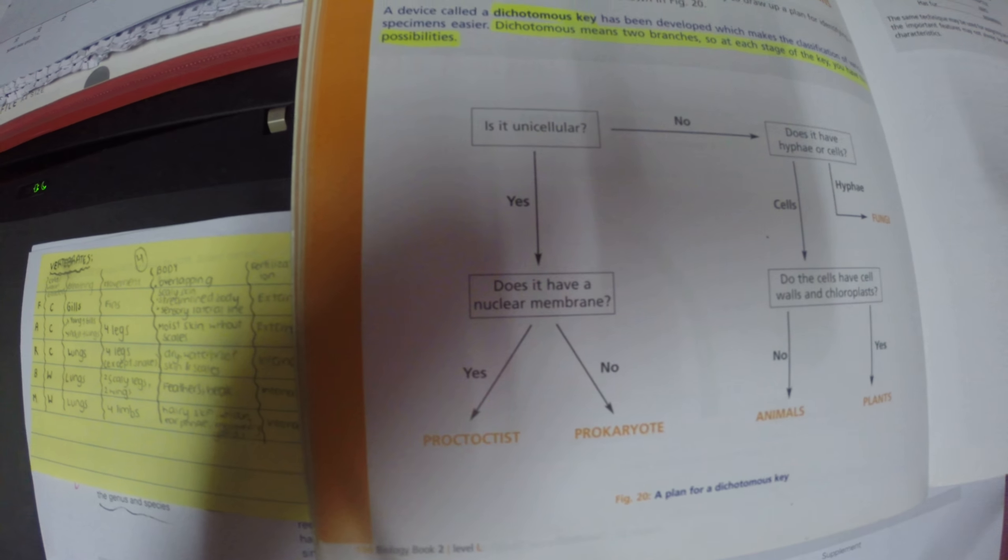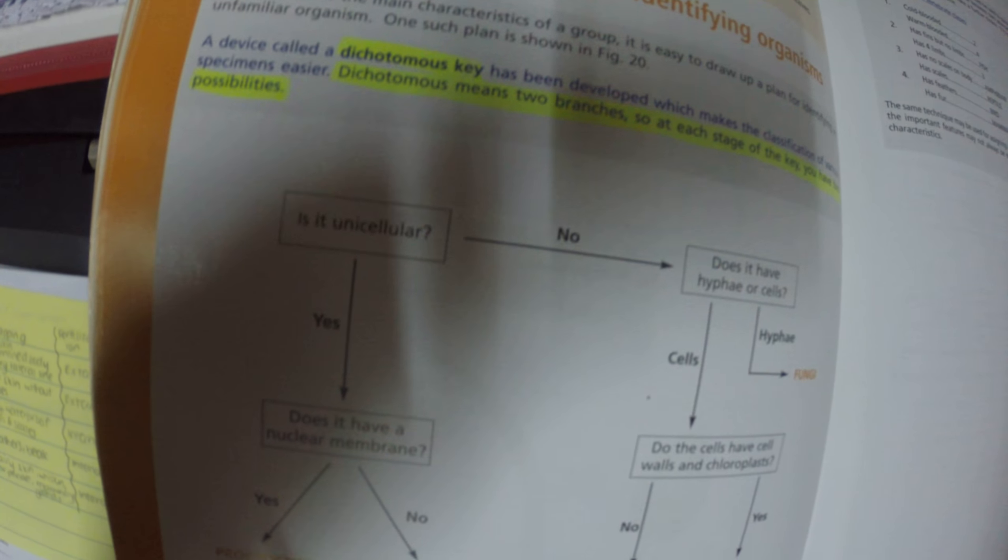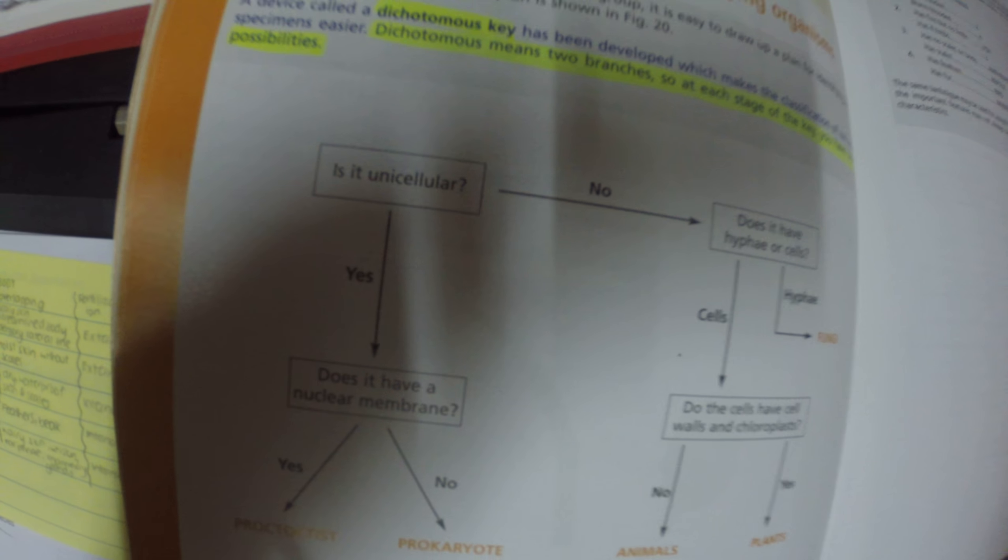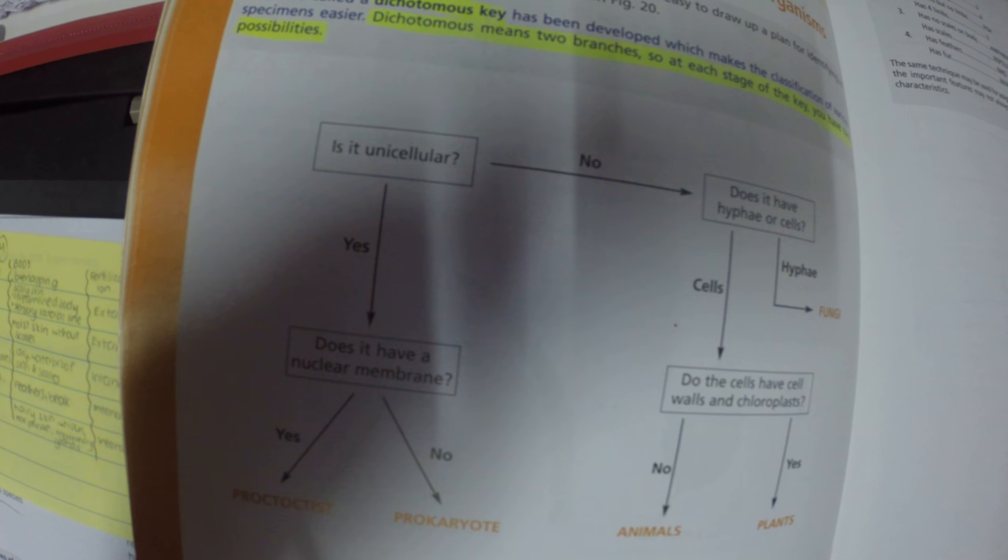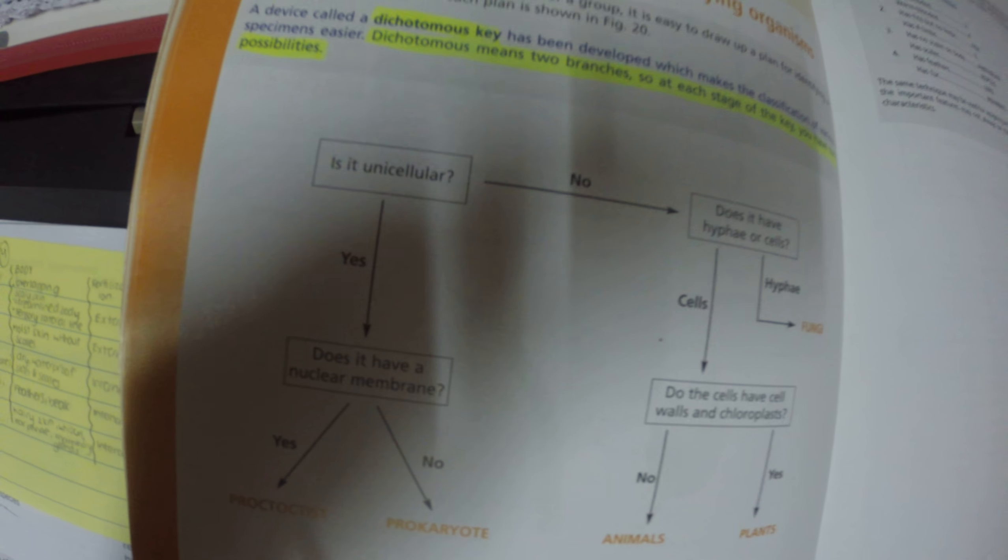And if it's cold-blooded vertebrates, there are three cold-blooded and two warm-blooded.